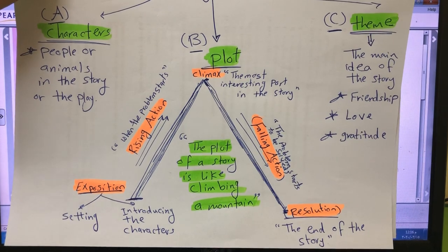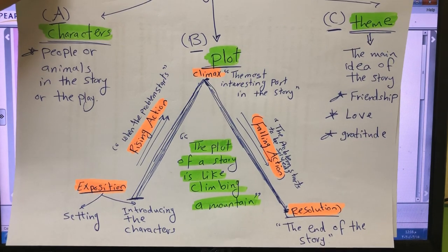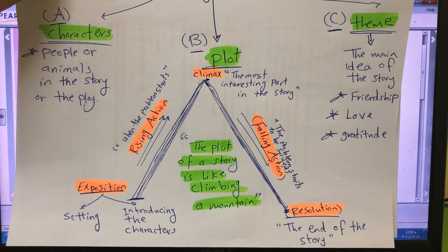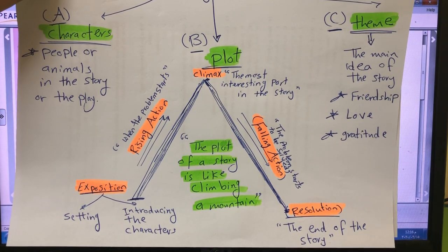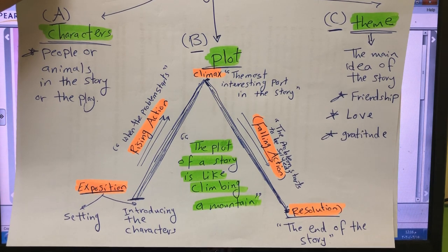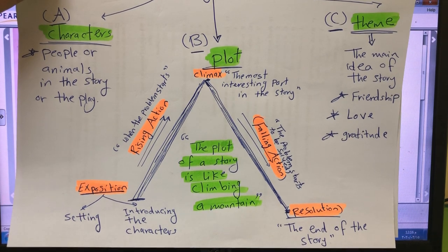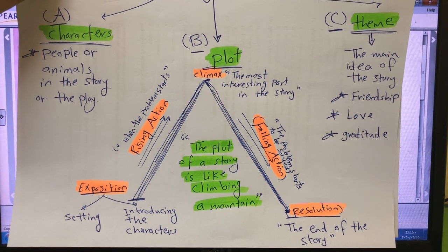The last part is the theme. The theme of the story is the main idea of the story — for example, friendship, love, or gratitude, which means when somebody feels thankful to somebody else for doing something for them. Those are the three literary elements for today. Do not forget: the plot of the story is like climbing a mountain.